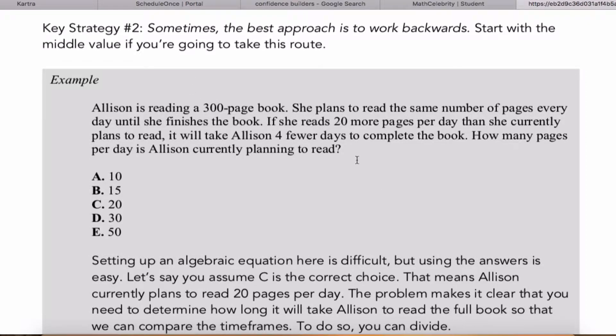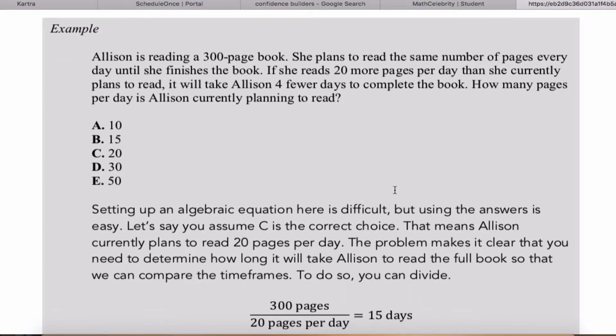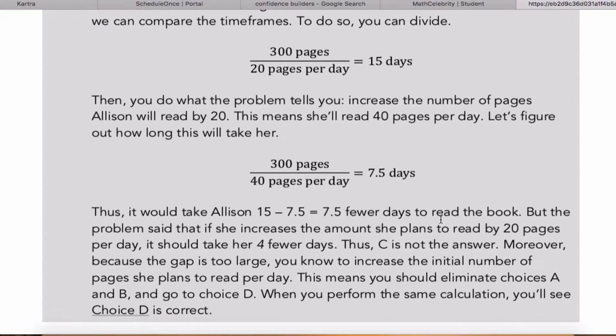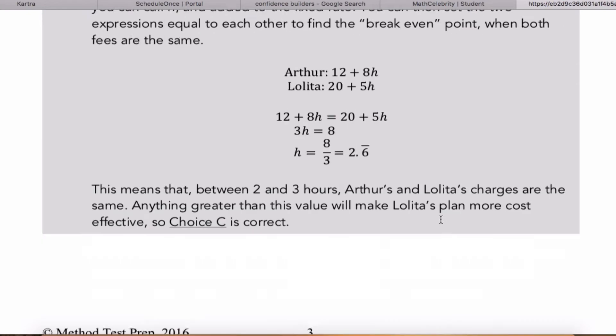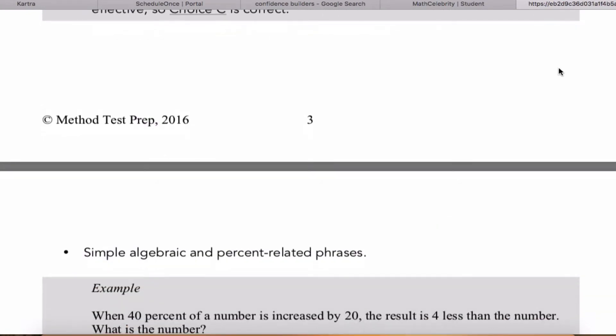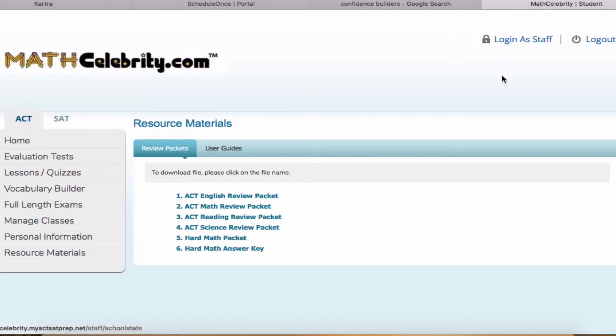We've got key strategy number two, sometimes work backwards is your best strategy, and we give a sample problem on how to do that. So you just keep scrolling down and you can see the key strategies. I'll do one more. We'll do science.